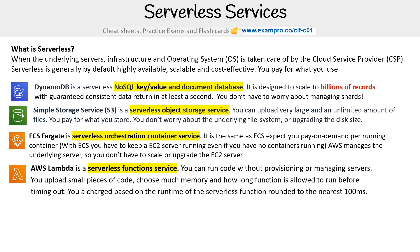We have AWS Lambda, which is a serverless function service. You can run code without provisioning or managing servers. You upload a small piece of code, choose how much memory you want and how long the function is allowed to run before timing out. You're charged based on the runtime of the function rounded to the nearest 100 milliseconds.